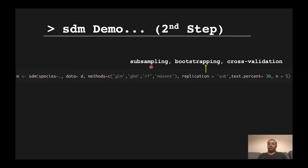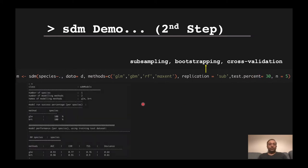You may use two or three replication methods together by specifying a vector. If you specify cross-validation ('cv'), add the argument 'cv.folds' for the number of folds — the default is four or five folds. When you fit the model and execute the model object 'm', you get a summary report.